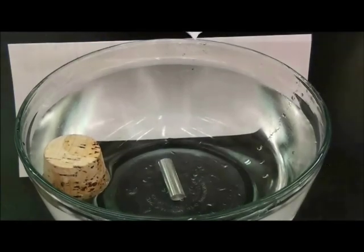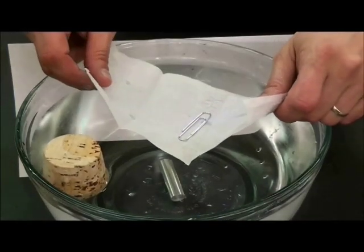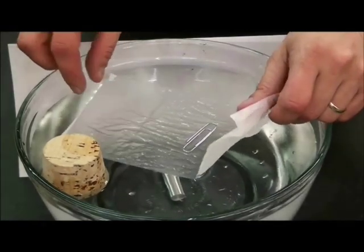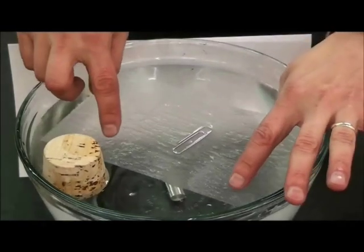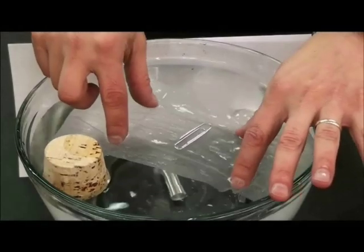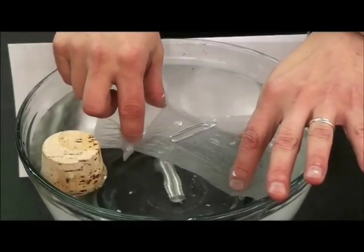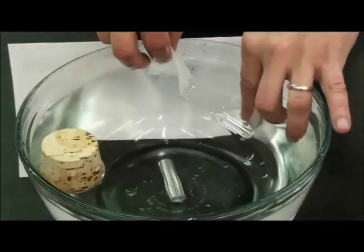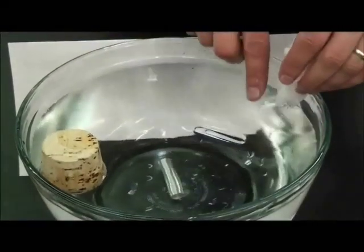But what about a paperclip? A paperclip is also made out of iron, but if we introduce a paperclip onto the surface of the water very carefully we see that the paperclip in fact will float on the surface of the water even though it is more dense than the water. This is because the surface tension of the water is supporting the weight of the paperclip.